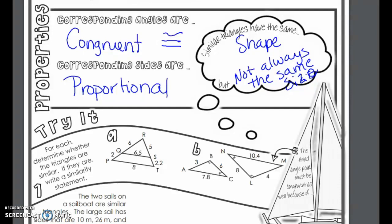Similar triangles have the same shape, but not always the same size. Now what we're going to do is we're going to go down below. We're going to talk about some of the ratios here. So if you notice in this big triangle is a smaller triangle.